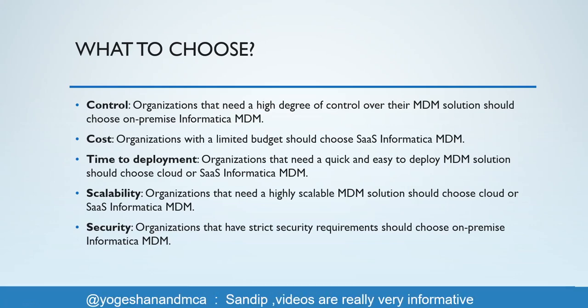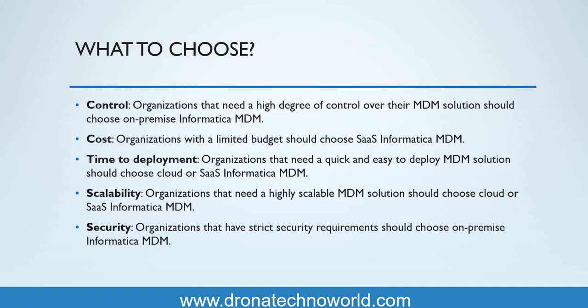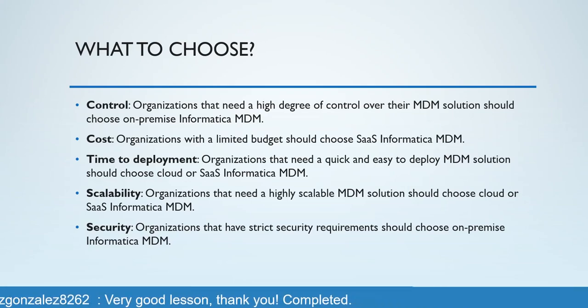If time to deployment is the main concern — because you might not have a proper deployment team or your team size is very limited and you need quicker deployment — then the Cloud or SaaS version is best. The SaaS version is the fastest compared to other MDM implementations. Regarding scalability, it is a critical factor especially if your organization is dealing with a lot of customers and growing at high speed. Scalability is more important with SaaS or cloud versions, as they are very easily scalable.